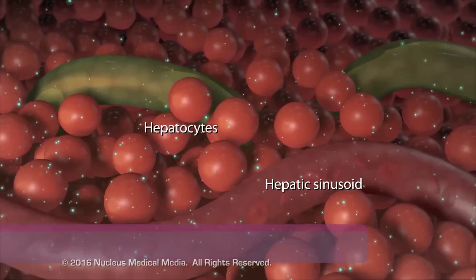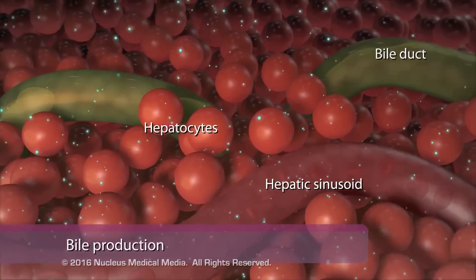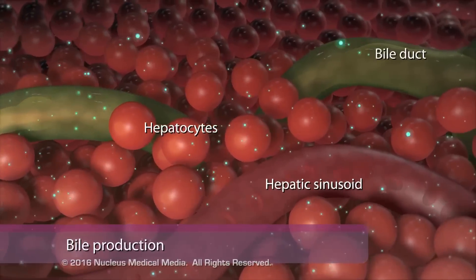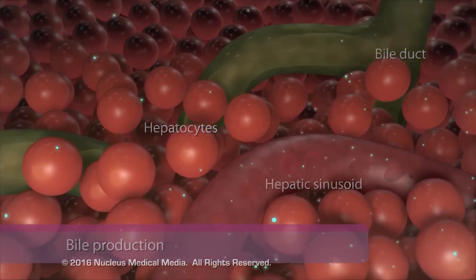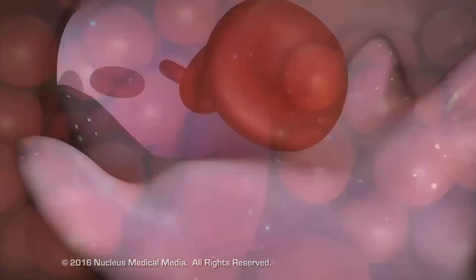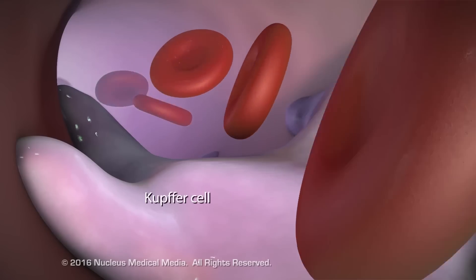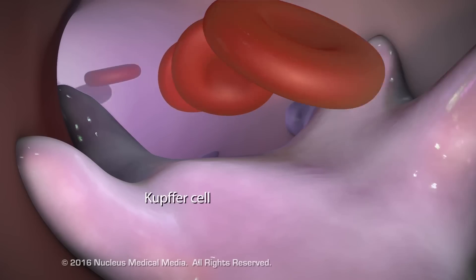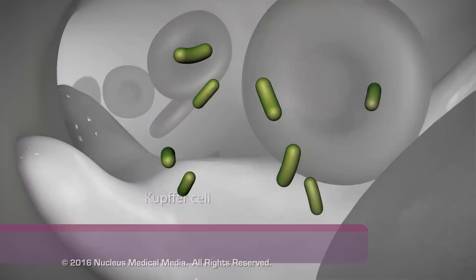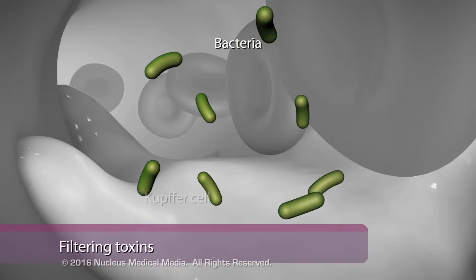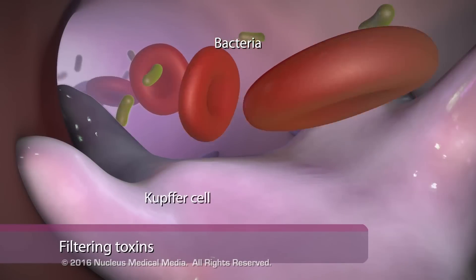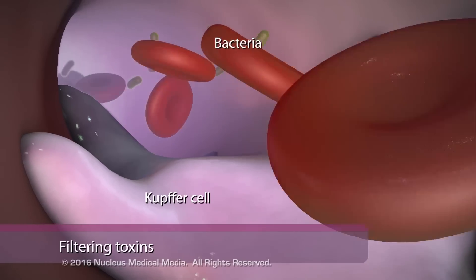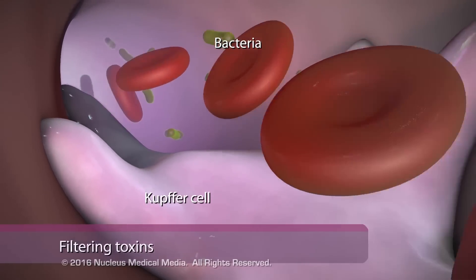Hepatocytes also secrete bile, which helps the body digest lipids. Kupffer cells reside in the liver and help to remove toxins and bacteria from the blood.